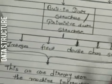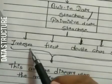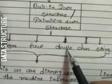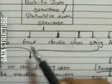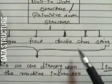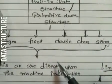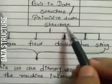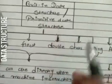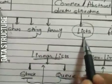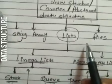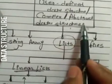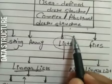Integer, float, double, character, and string — these all data types are included in primitive data structure. And array, list, and file — these are all included in complex as well as abstract data structure.